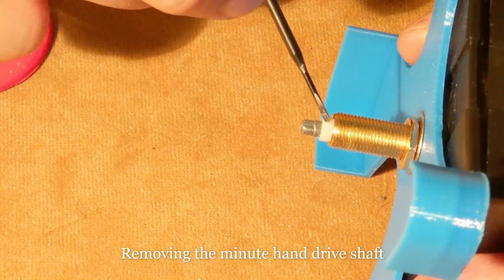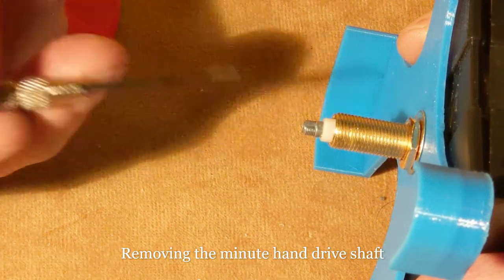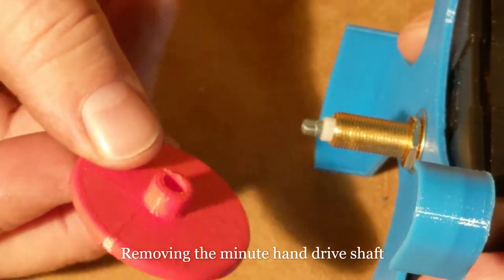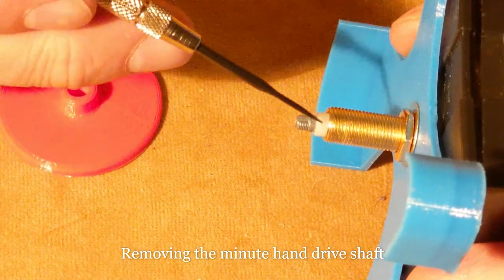This is the hour hand shaft, the minute hand shaft, and the second hand shaft is inside there. This is a piece that I've designed and 3D printed that slides over and slips onto this hour hand shaft.